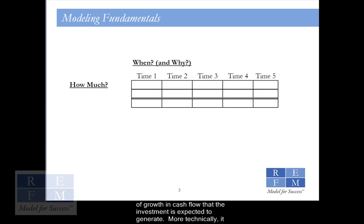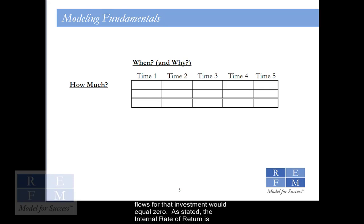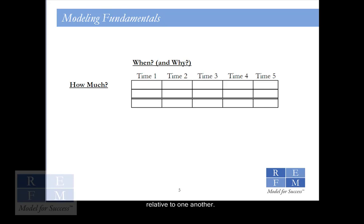More technically, it is the discount rate, measured as a percentage, at which the net present value of all cash flows for that investment would equal zero. As stated, the internal rate of return is affected both by the magnitude of the positive and negative cash flows and their timing relative to one another.